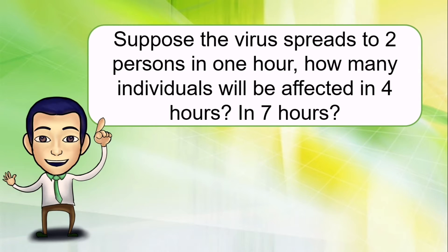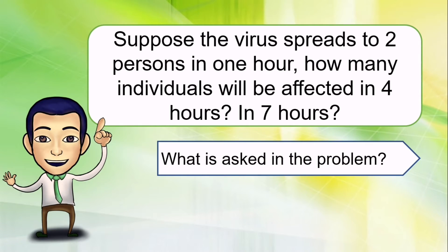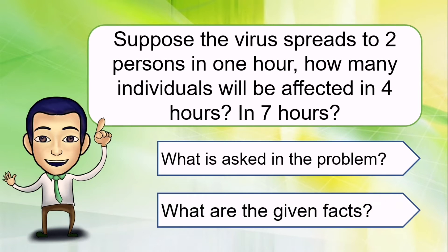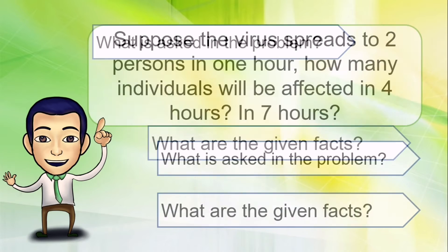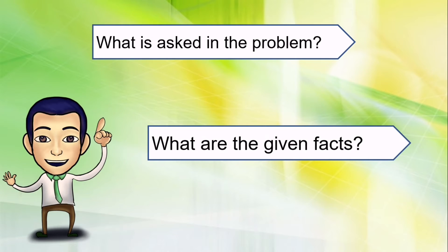I have here a mathematical problem and let's try to read and understand this together. Suppose the virus spreads to two persons in one hour. How many individuals will be affected in four hours? In seven hours? Let's try to analyze and understand it by answering these questions: What is asked in the problem? What are the given facts? Before answering these questions, always remember to wash your hands often and practice social distancing to help stop the spread of COVID-19.